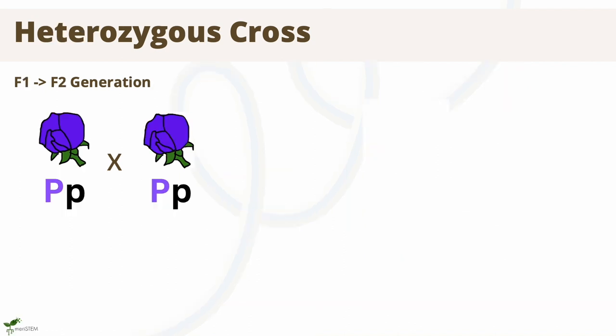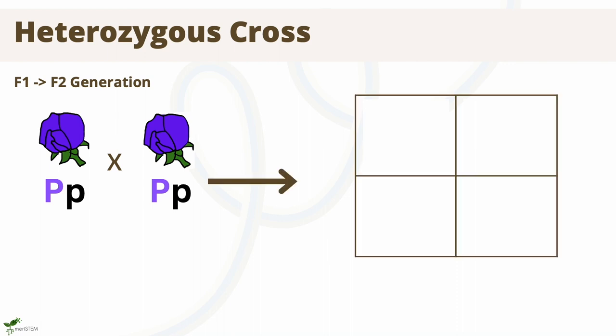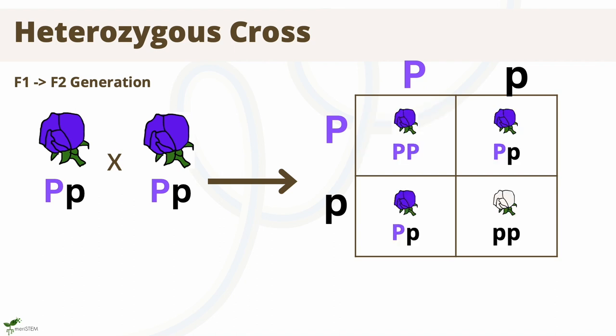Now let's see what happens to the white trait if we cross over two heterozygous plants — in other words, what if we crossed over two offspring from the previous generation? Following the same process as before, we start by writing the two gametes along the sides. We can then fill in the Punnett square, just like last time. Now we can predict the genotype and phenotype ratios.